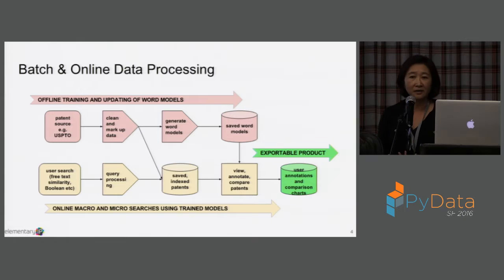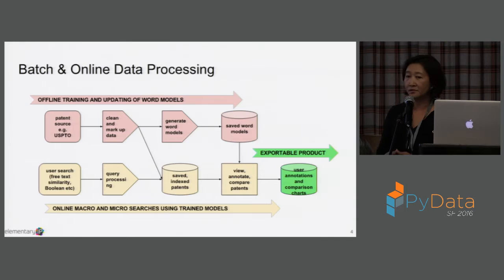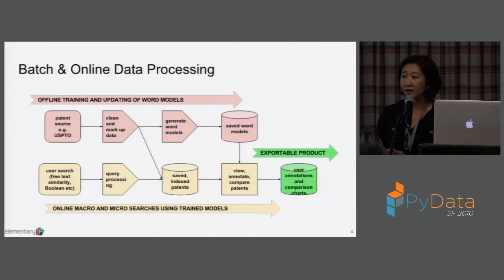We provide search. Search is not surprising — whenever you go to any web application, you expect to have a search. It's not that hard if you're just doing an out-of-the-box free text search, because you just put your documents in Solr or Elasticsearch and there you go. What we're offering is a little bit unique: we're offering similarity search. There are two types of similarity search — one is macro-searching and the other is micro-searching.